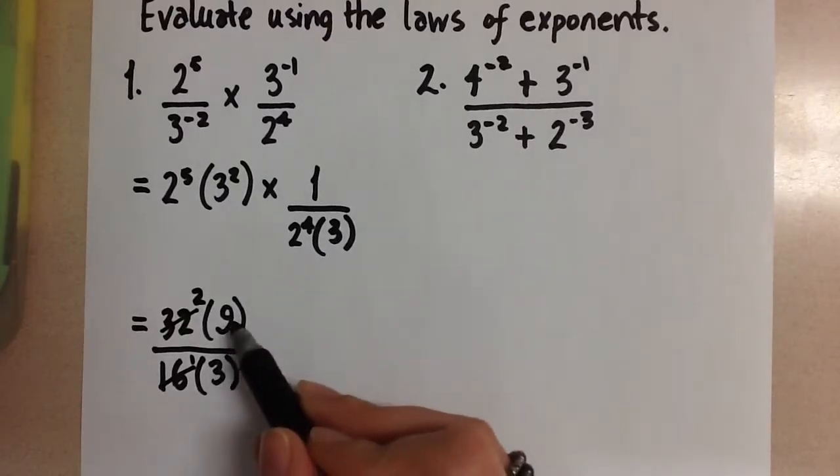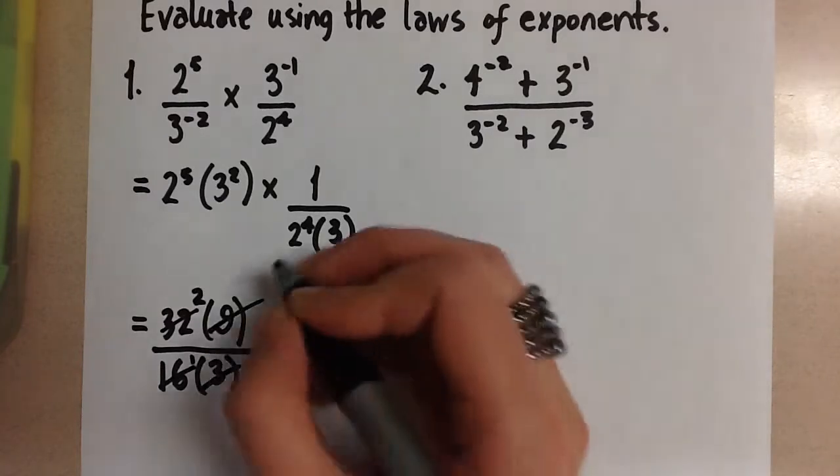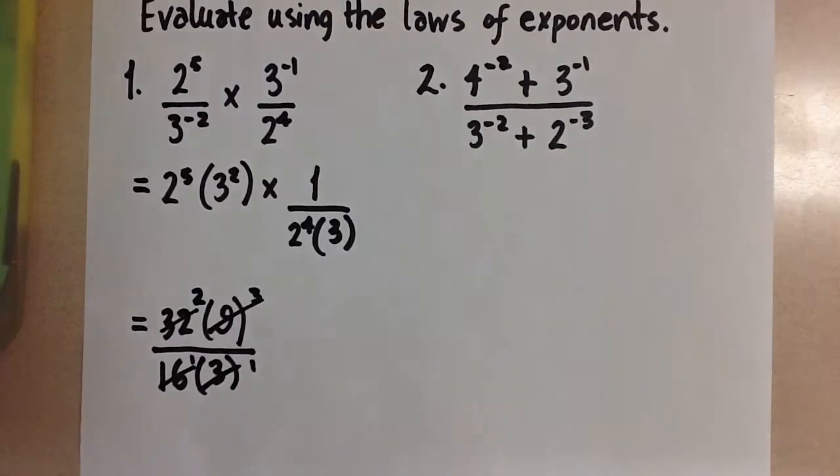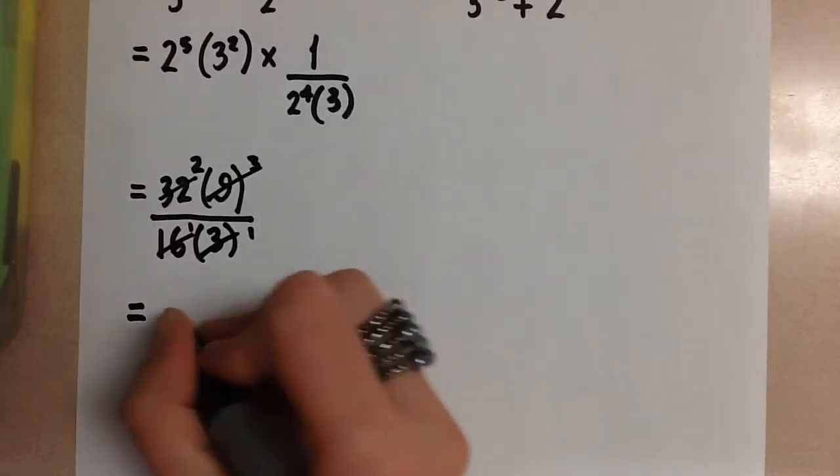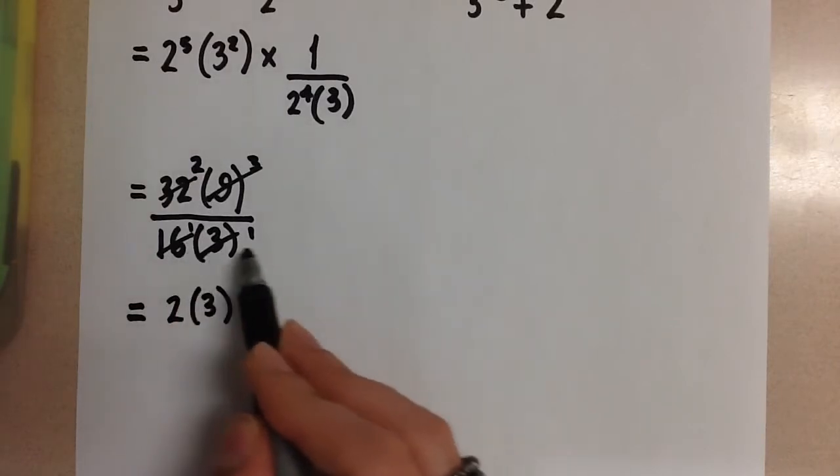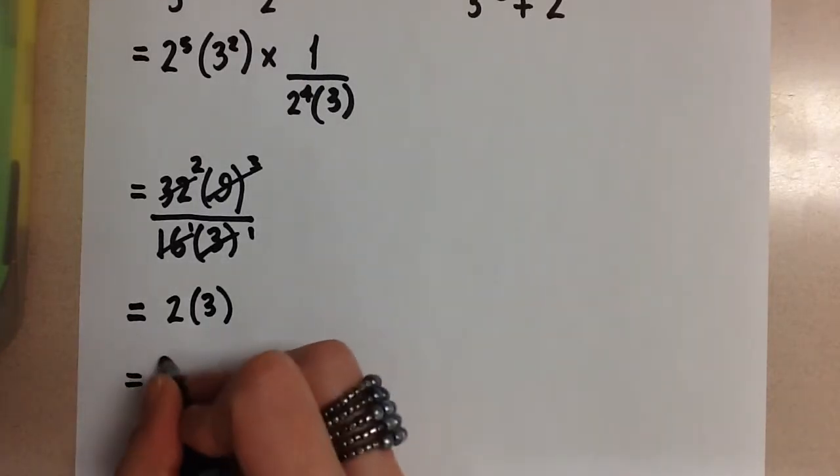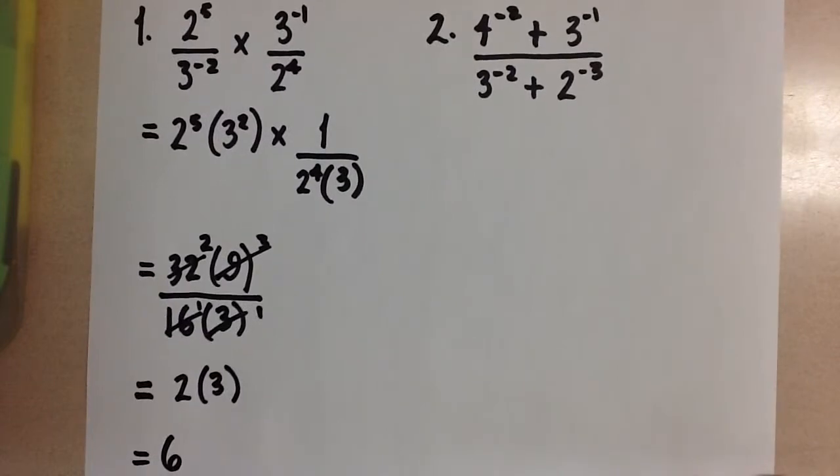Then the 9 and the 3 are going to cancel and we'll get a 3 in the numerator and a 1 in the denominator. So this leaves us then with 2 times 3 and we just have the ones in the denominator which we can leave out. 2 times 3 is 6 and so our answer here is 6 for this expression.